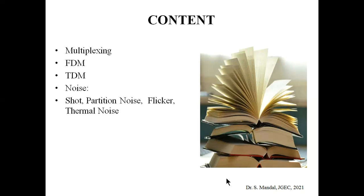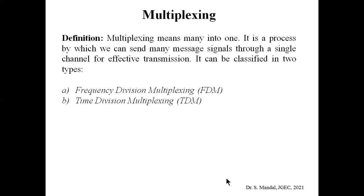Multiplexing means 'many into one.' It is a process through which we can send many message signals through a single channel. To increase efficiency, we need to transmit more signals in a given amount of time. Multiplexing is classified into two types: FDM, which stands for frequency division multiplexing, and TDM, which stands for time division multiplexing.